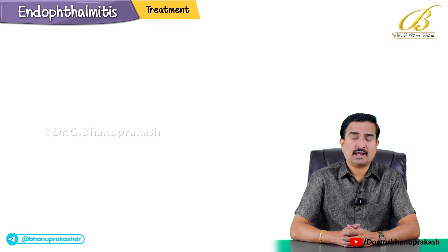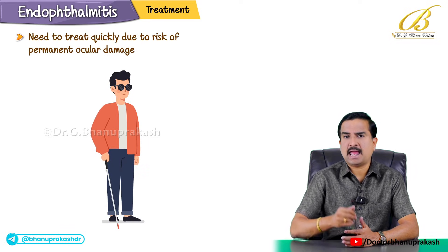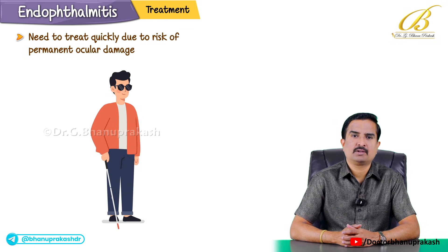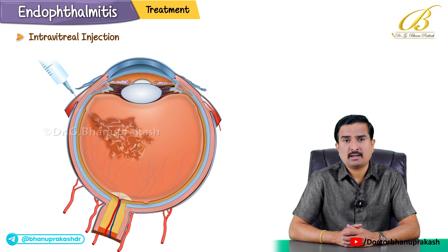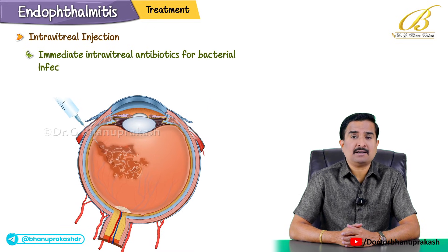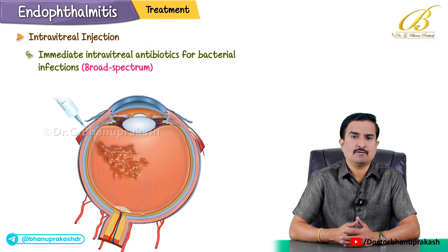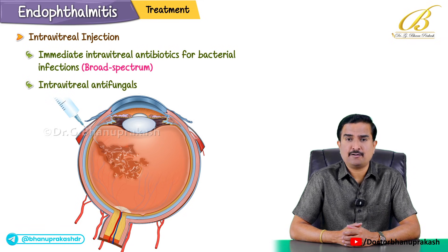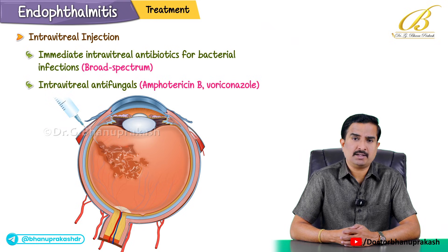Endophthalmitis is an emergency condition requiring prompt action, as every moment of delayed treatment risks permanent ocular damage. Intravitreal injection of broad-spectrum antibiotics covering both gram-positive and gram-negative organisms is recommended for bacterial infections. Intravitreal antifungals such as amphotericin B are the most important treatment for fungal infections.